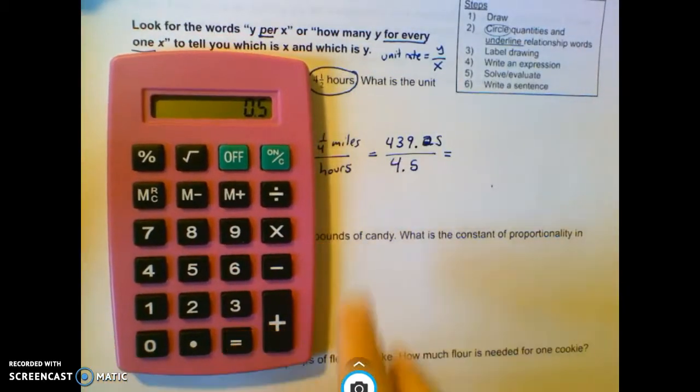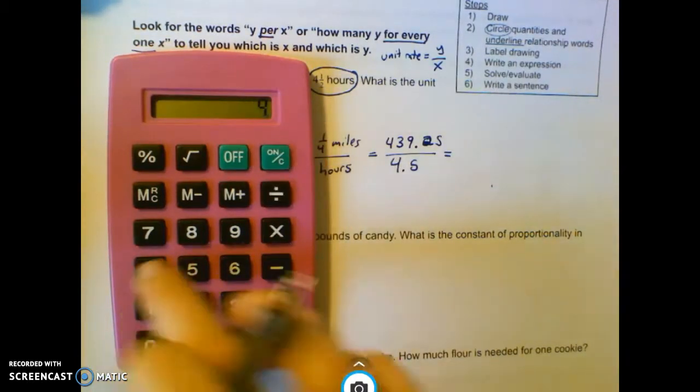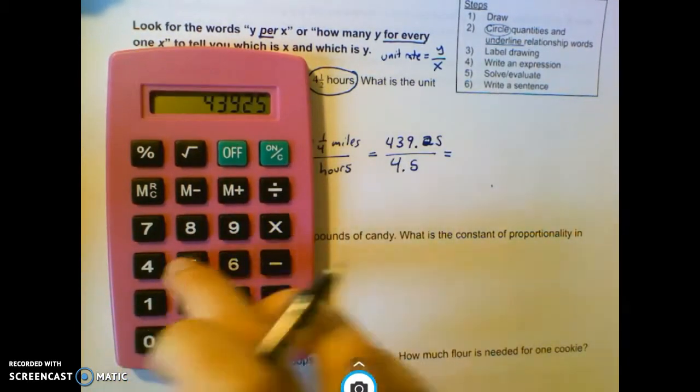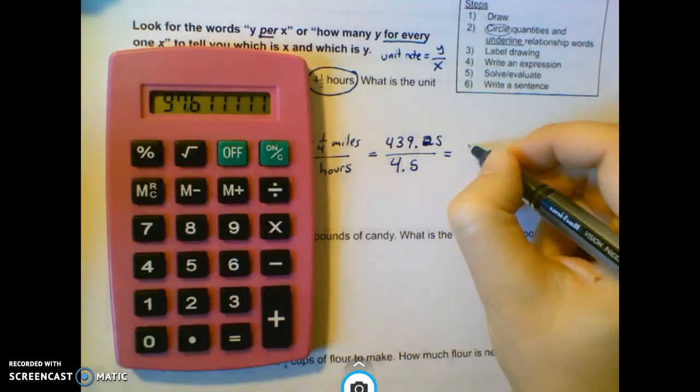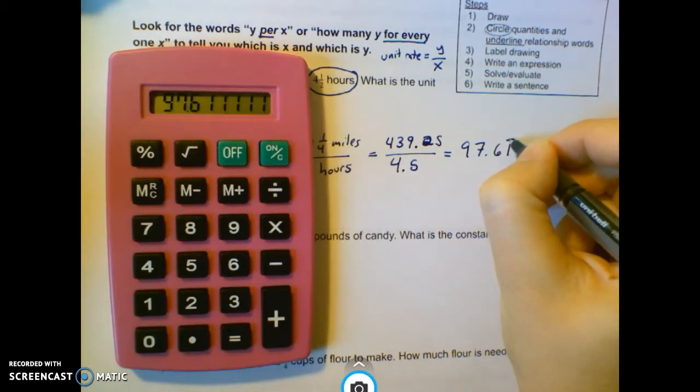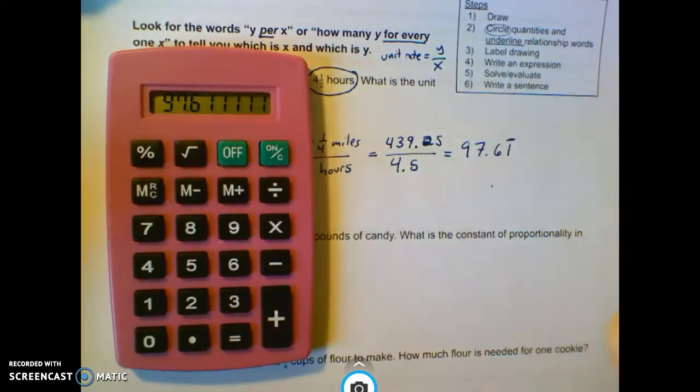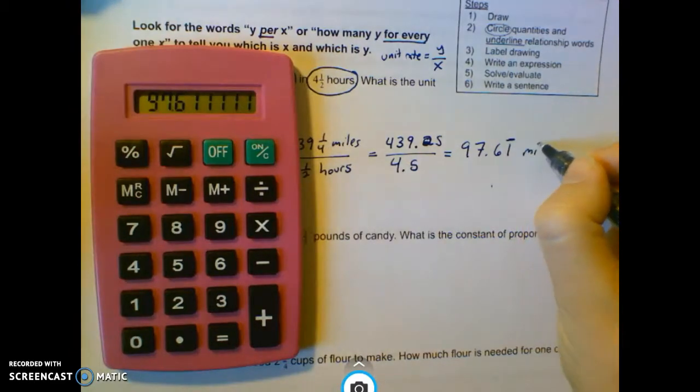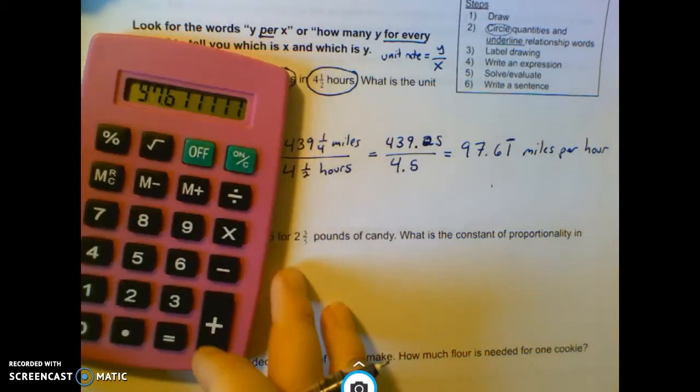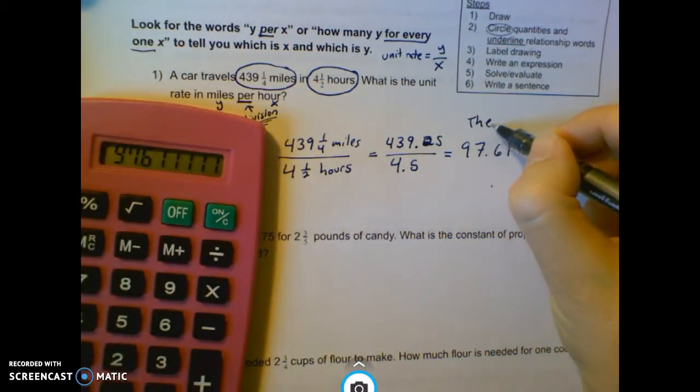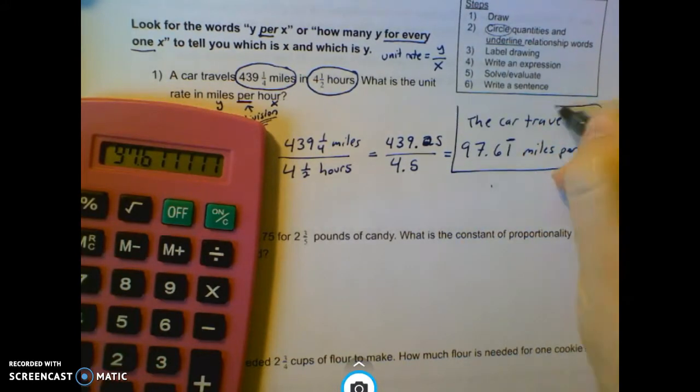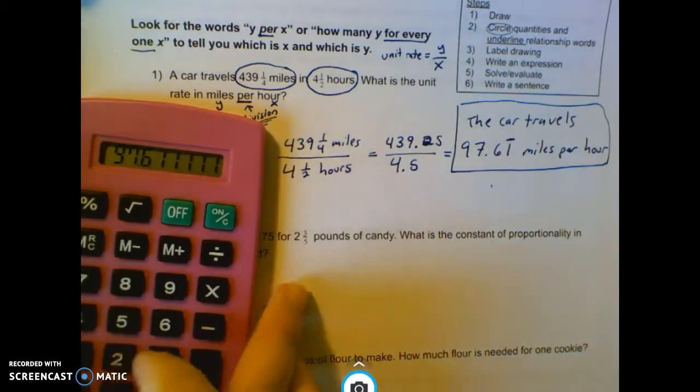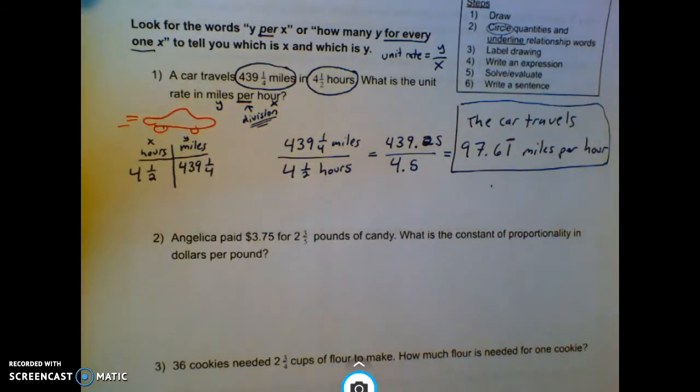Now, this I can do in the calculator. 439.25 divided by 4.5. That one repeats forever. So I'm going to draw the bar over it. And my units are miles per hour. So that means the car travels 97.61 repeating miles per hour. And that's what there is to it.